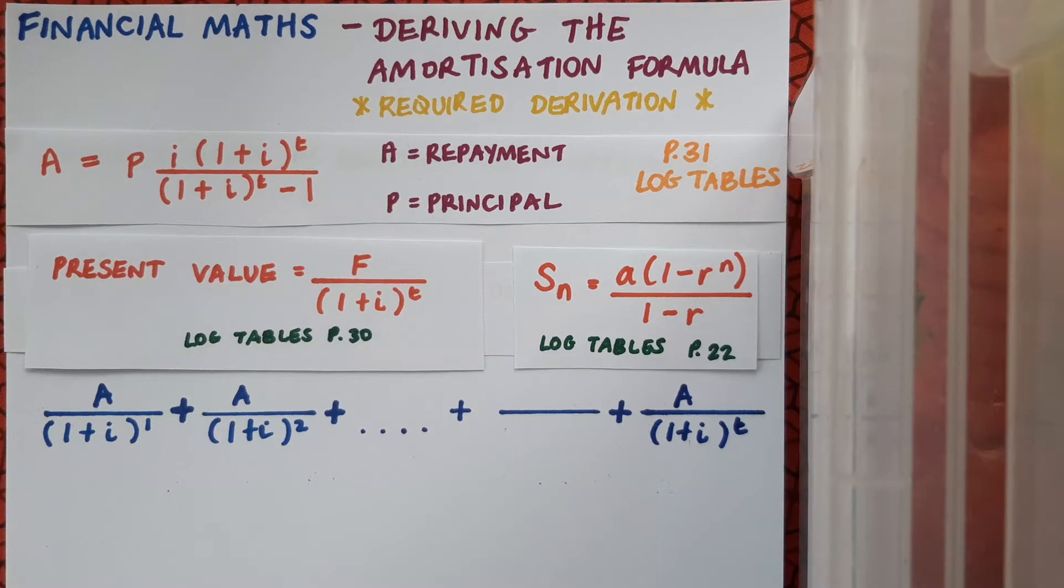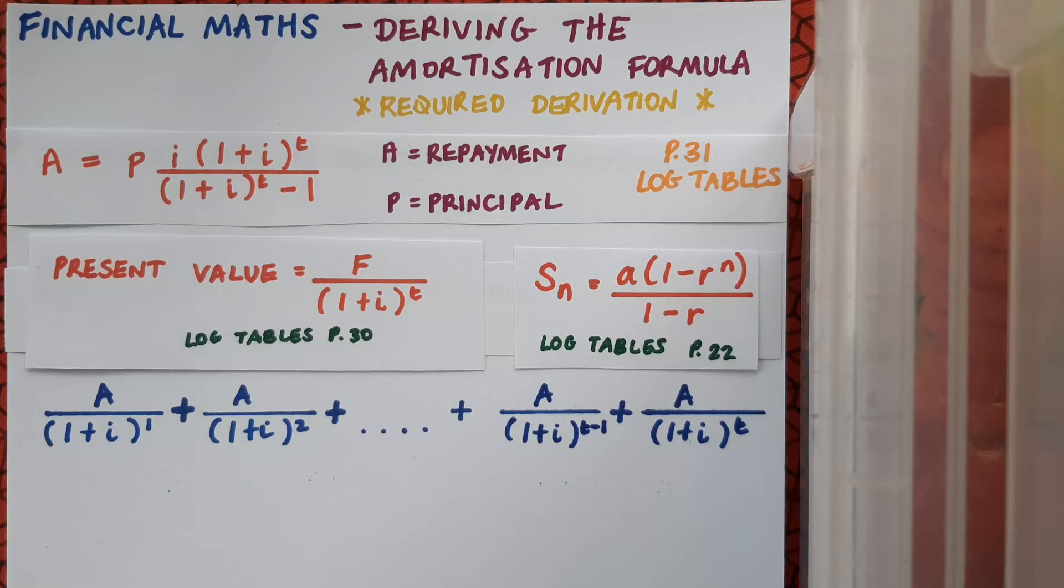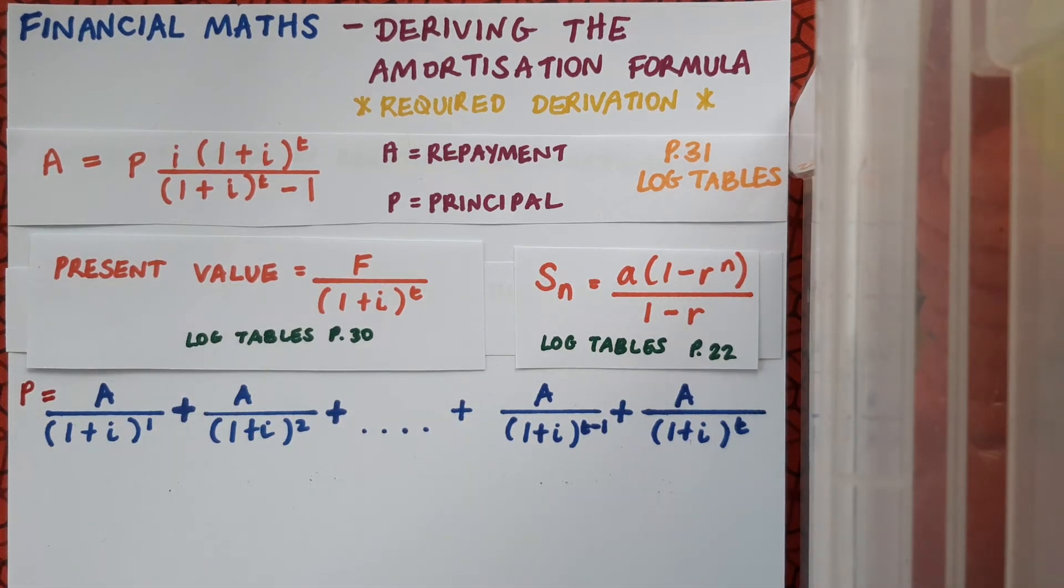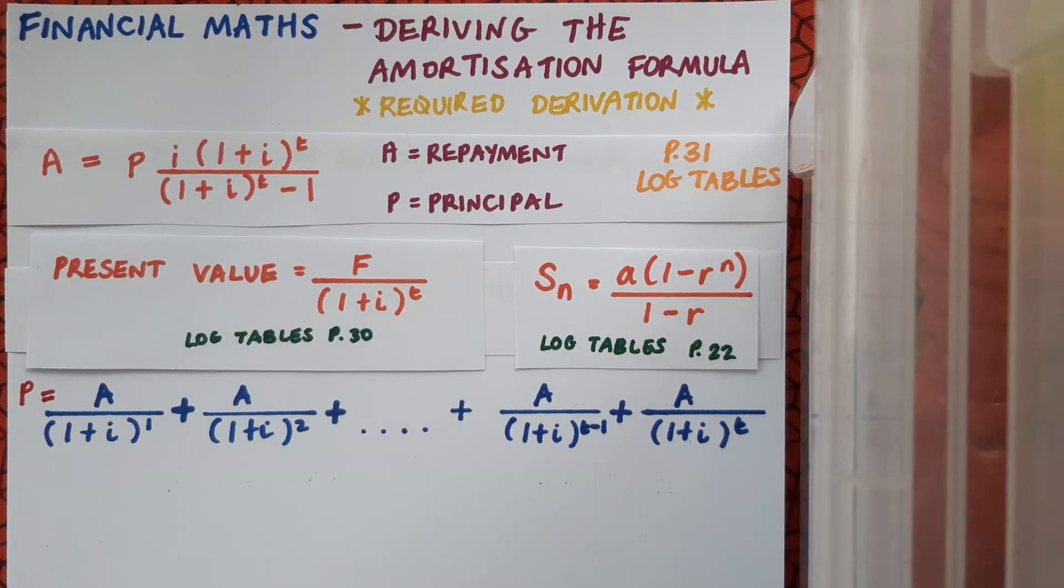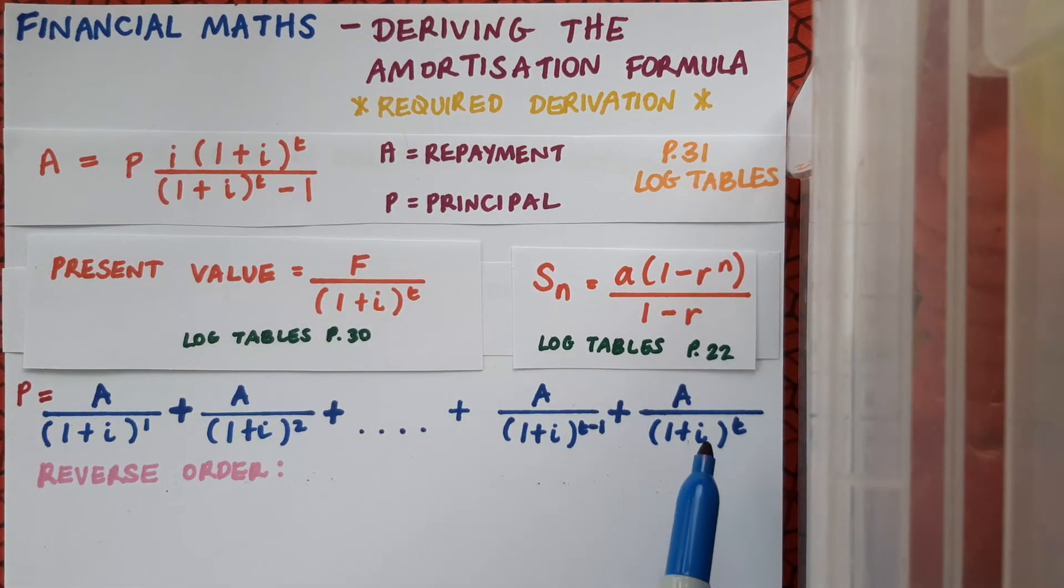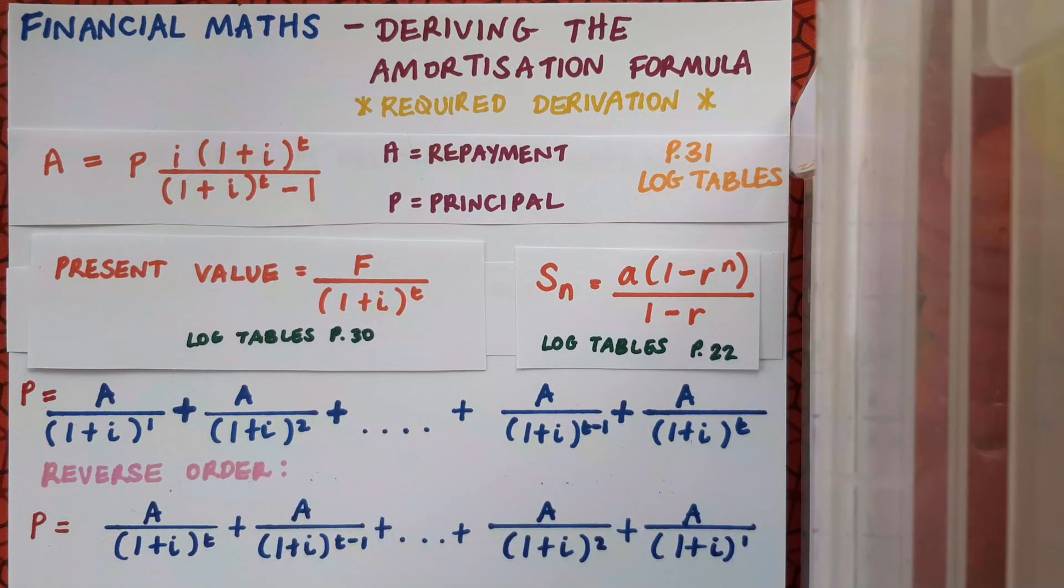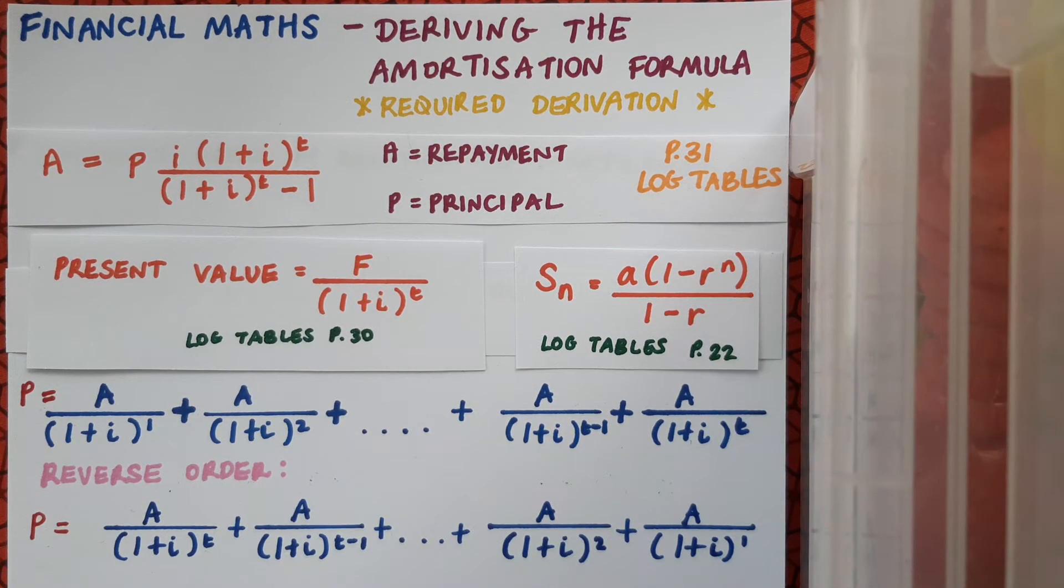So my last entry will be A over 1 plus I to the T, and the one before that, so a month earlier, is A over 1 plus I to the power of T minus 1. And the principal, or the entire value of the mortgage, is equal to the sum. Now we saw in earlier videos on installment savings how this type of question is made a bit easier by reversing the terms. So I'm literally just starting from the end and writing it in the other direction. Now I'd just like to point out that this reversing the order step isn't strictly necessary, but it will make the algebra later on so much more straightforward, so I highly recommend it.